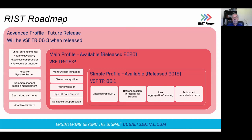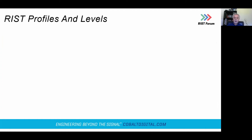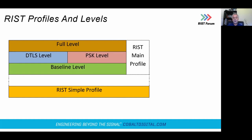So what's this business of profiles? RIST is organized in profiles and levels. We started with Simple Profile, which includes ARQ, retransmission throttling, and link aggregation as main features. Then Main Profile adds tunneling, encryption, and authentication. Both are released and you can get the specification for free. The Activity Group is now working on Advanced Profile with a number of additional features being considered. Simple Profile was published in VSF TR-06-1, and Main Profile adds tunneling and multiplexing with a baseline level, a DTLS level, and a PSK level.